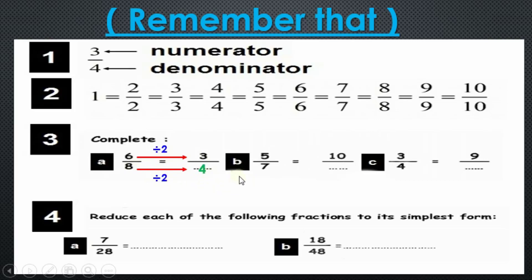Question number b: five sevenths equal ten over what? The arrow goes to the empty place. The five became ten — so we did times five. Five times what equals ten? Five times two. Smart students who memorized the table: just as we do times on top, we do times on the bottom. Seven times two equals...